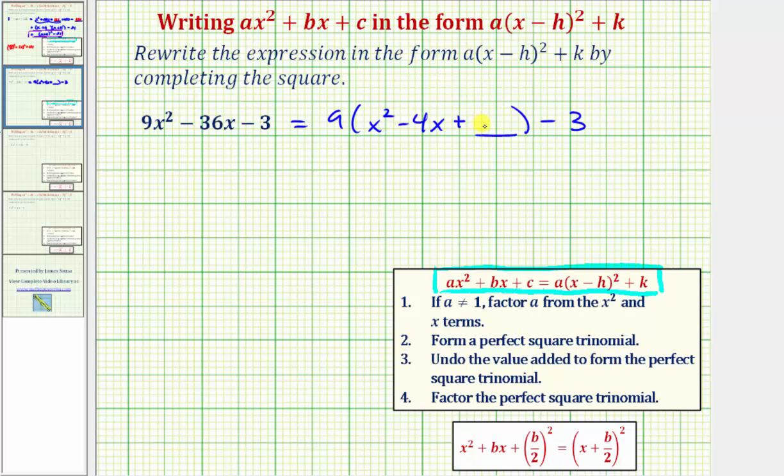And notice how here when we add a value here, we're really adding nine times that value, which we'll have to undo. So let's write minus a constant here.